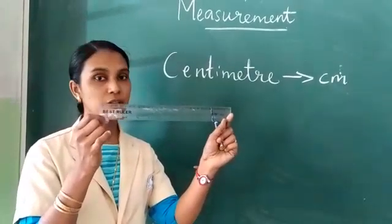Then height of the tree — is it longer or shorter? The tree is taller, so we can use the unit metre. I hope you all have understood how to measure using metre and centimetre.